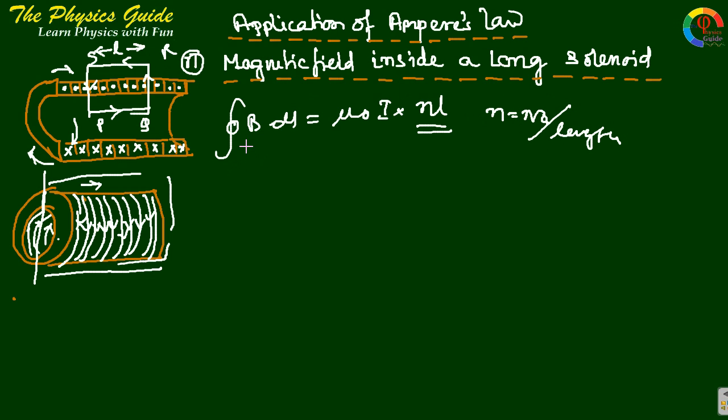This closed line integration can be split into four terms. That is for PQ, B dot dL, plus for QR, B dot dL.